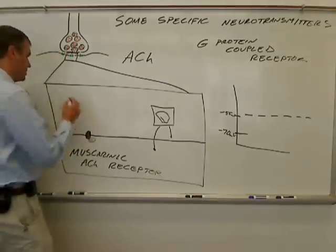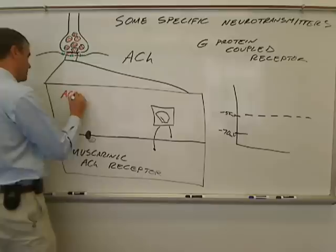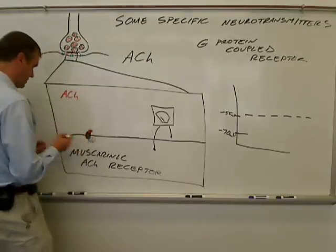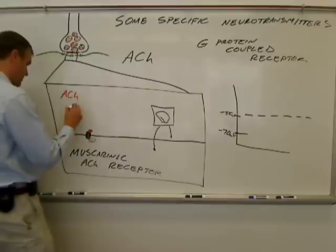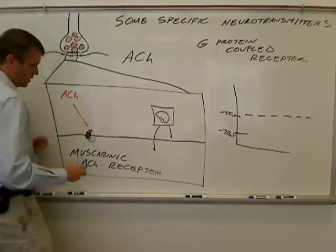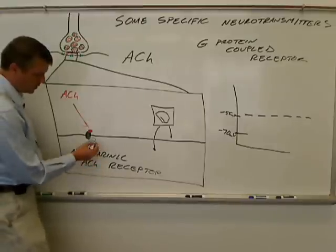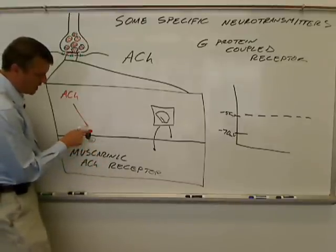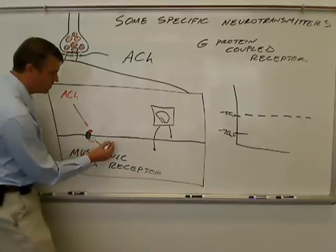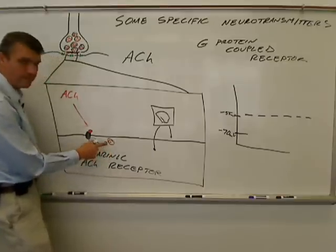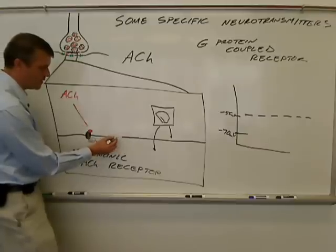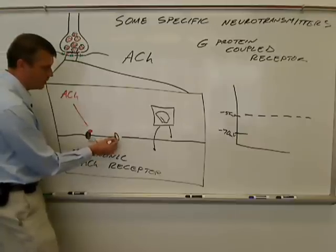All right. Here comes my acetylcholine again. And it's going to bind to its receptor there. For a muscarinic acetylcholine receptor, when it binds ligand, or when it binds acetylcholine, the G-protein is released. That G-protein is then going to go on and activate or affect another protein.